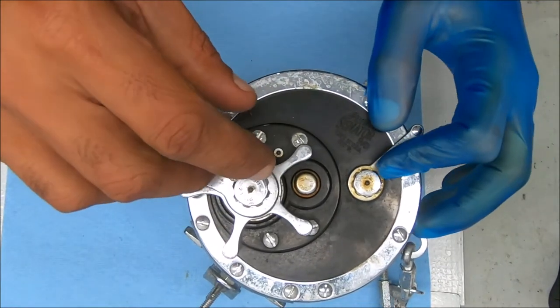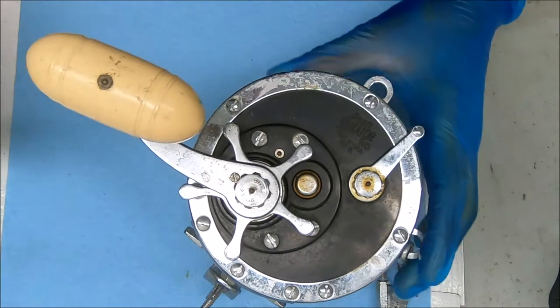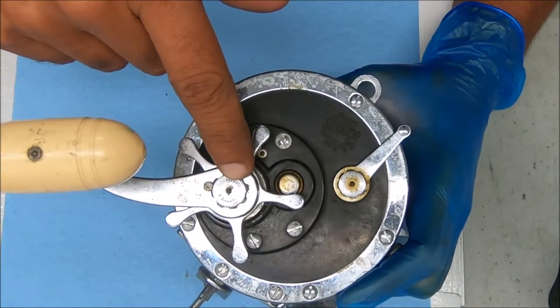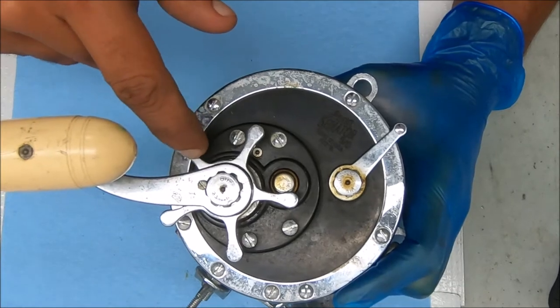I'm gonna just throw this into free spool and while I break this down, I'm gonna remove that screw there and that screw as well and get to the star drag.